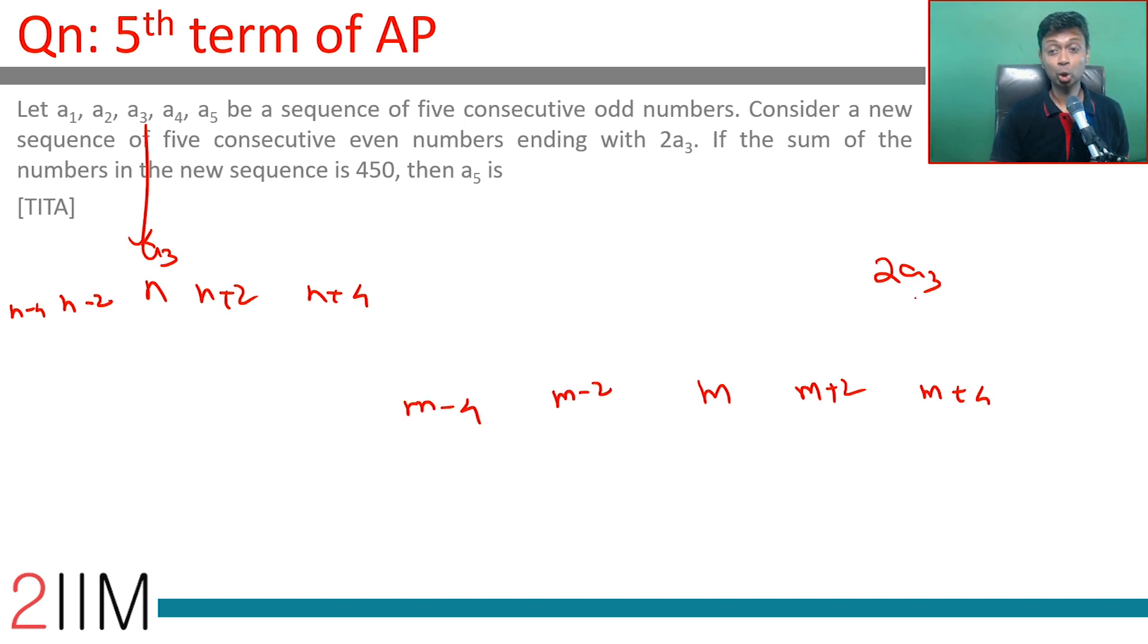2*a3 is the last number that happens to be m plus 4. Now, adding all this we get 450, or the middle number is 90. So m is 90, 92, 94. 94 is 2*a3.